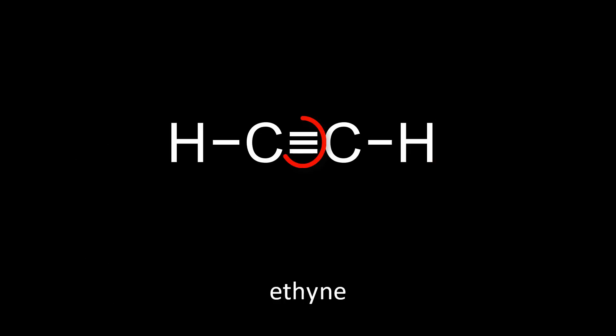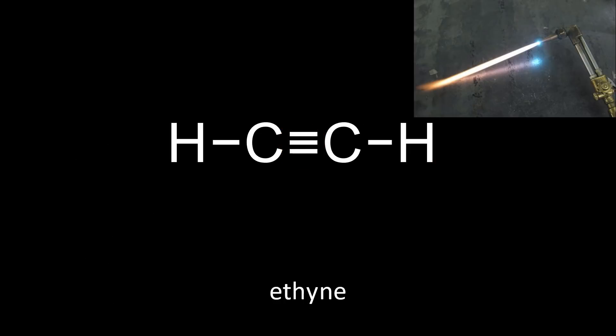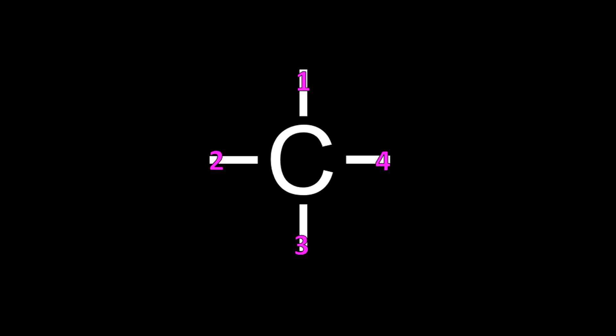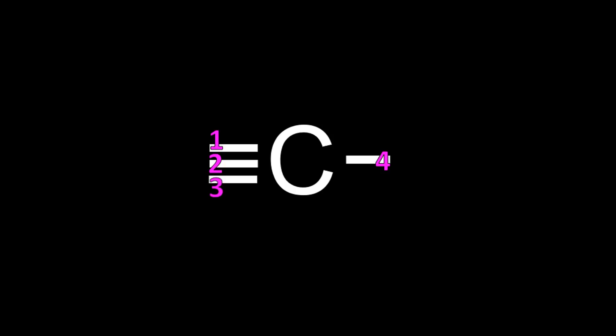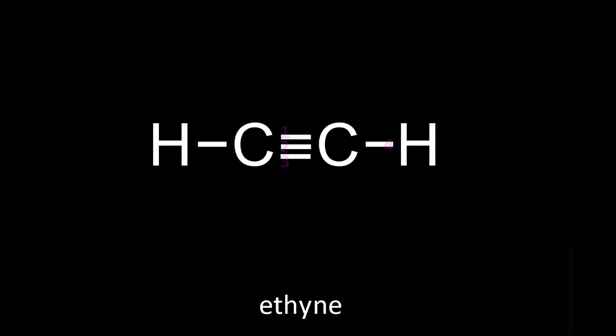Carbon can also triple bond. This is ethyne, the gas used in acetylene torches used in welding and other applications requiring a lot of heat. An important point to consider here is that carbon always has four bonds. Each dash represents a bond, a pair of electrons, and so whether carbon is entirely single bonded or has a double bond or a triple bond, there are still a total of four bonds — four electron pairs around the carbon.